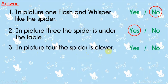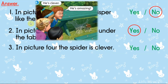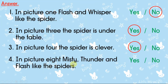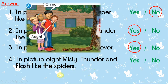In picture four, the spider is clever. 在第四个图片显示，那只蜘蛛是很聪明的。Is it? He's clever — so the answer is Yes. In picture eight, Misty, Thunder and Flash like the spiders — yes or no? 在第八张图片中，Misty, Thunder 和 Flash 都喜欢蜘蛛吗？They are scared, so they don't like the spiders. The answer is No.